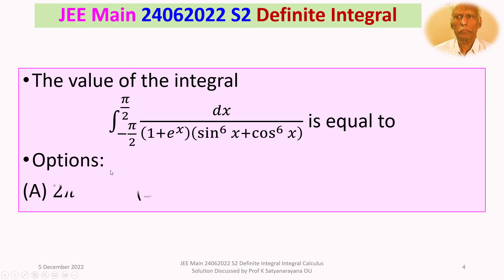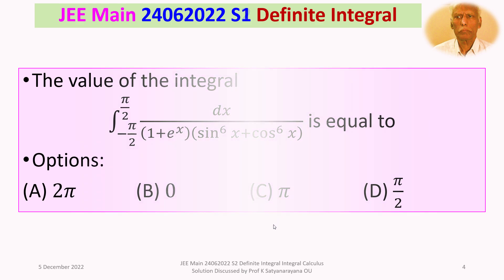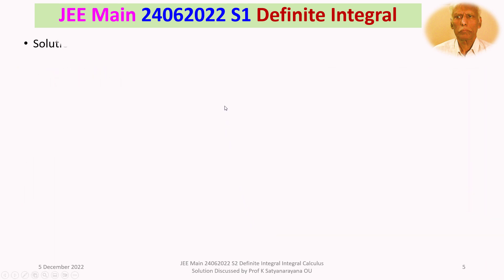We are given four options: option A is 2π, option B is 0, option C is 5, and option D is 5/2. We have to evaluate this definite integral and find the correct answer from these four options. We now discuss the solution of the problem in detail.